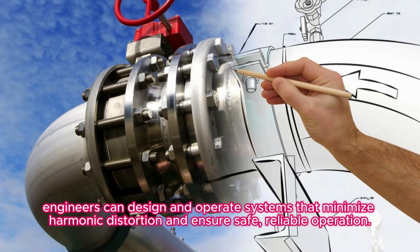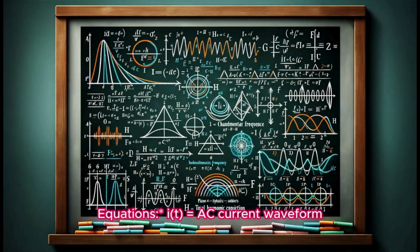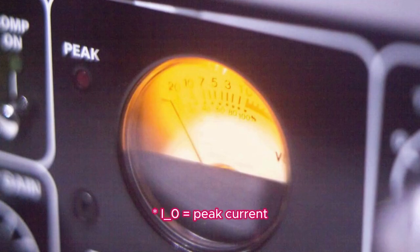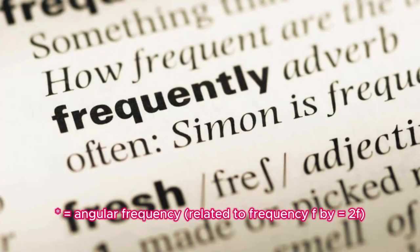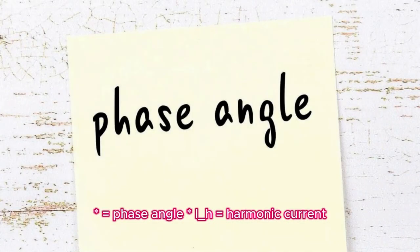Equations: i(t) = AC current waveform, I_0 = peak current, ω = angular frequency related to frequency f by ω = 2πf, φ = phase angle.